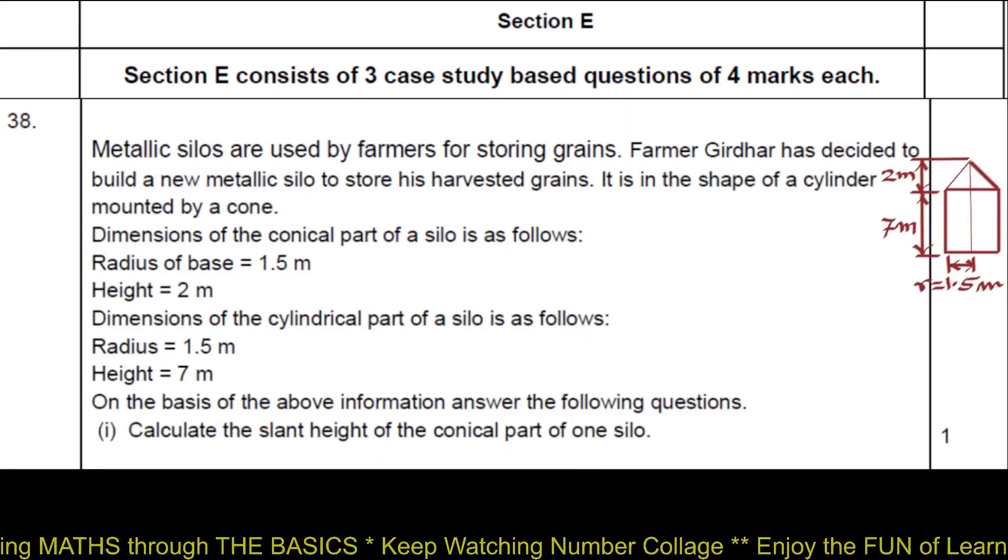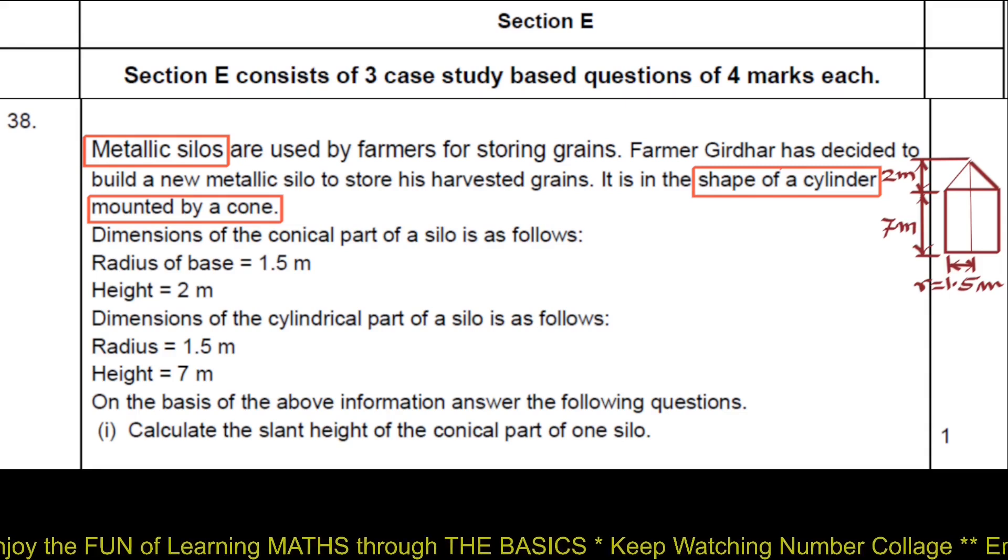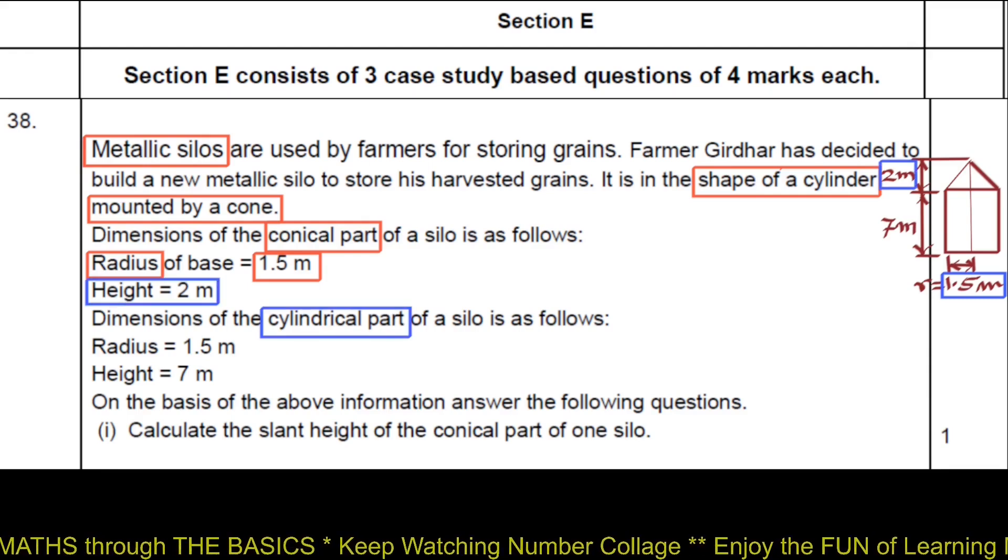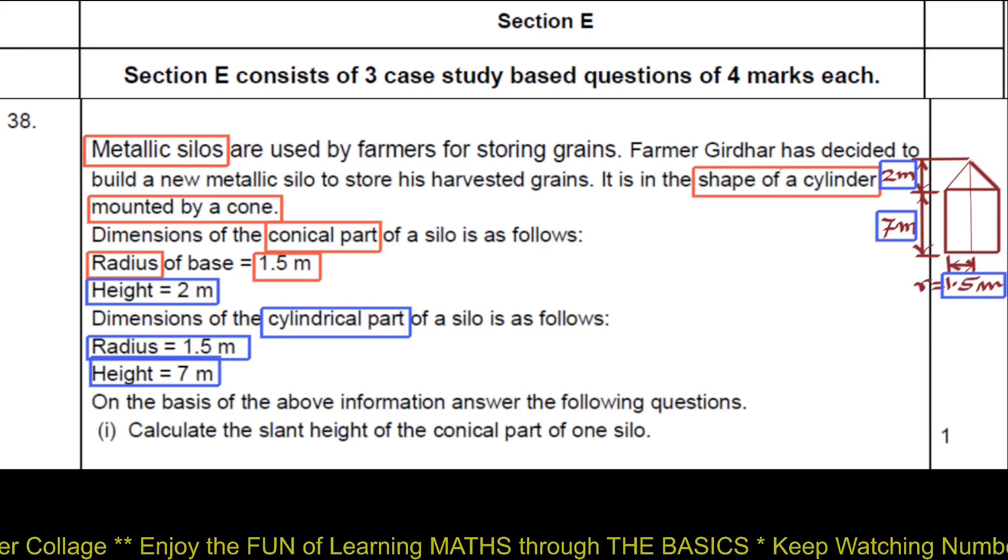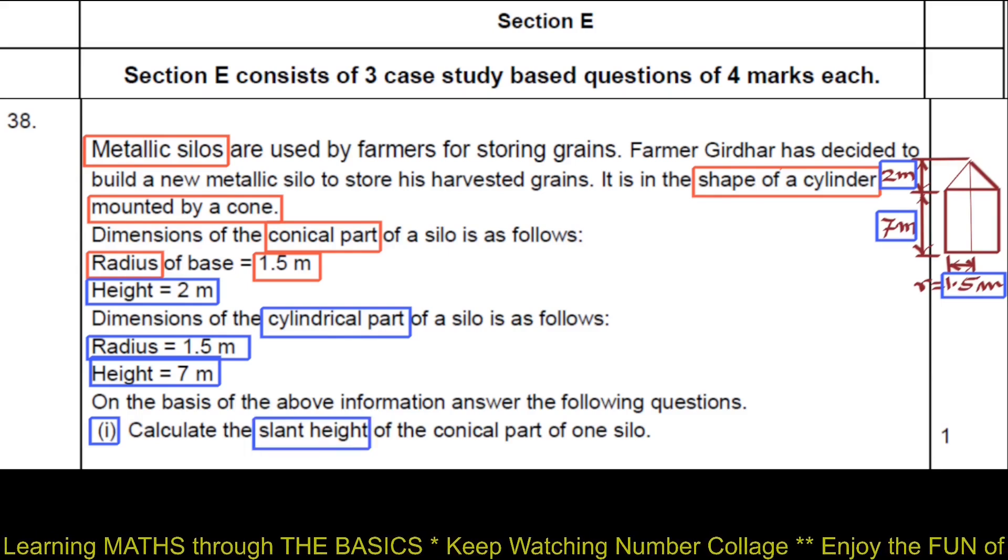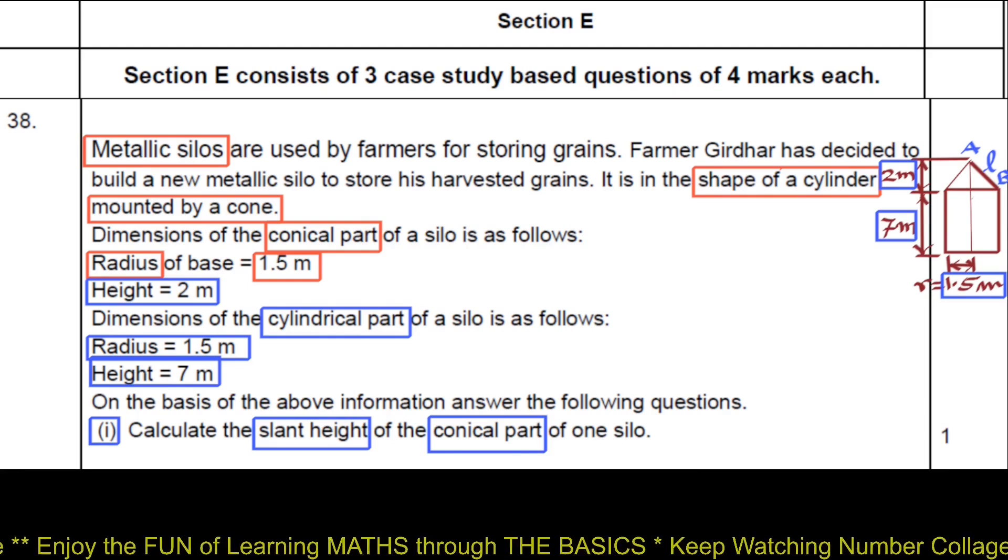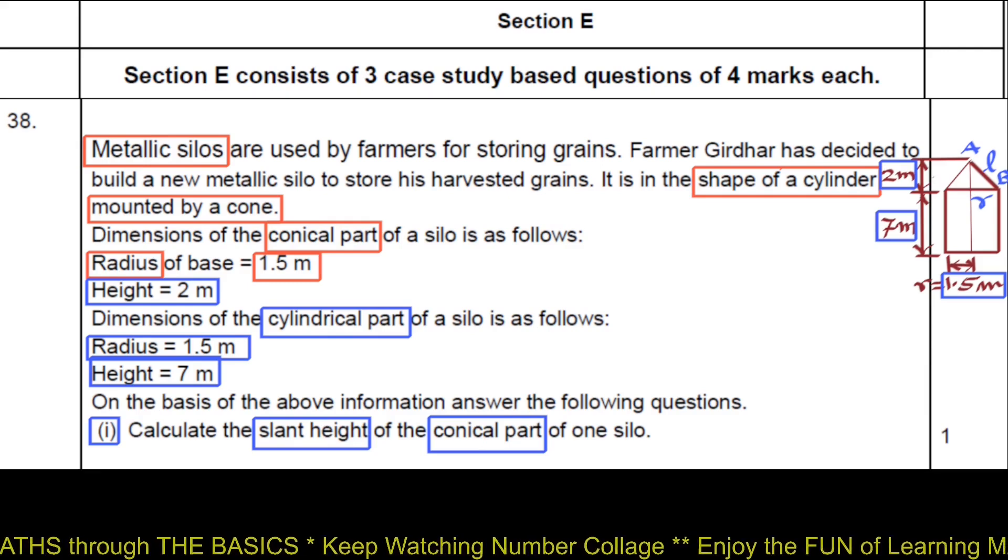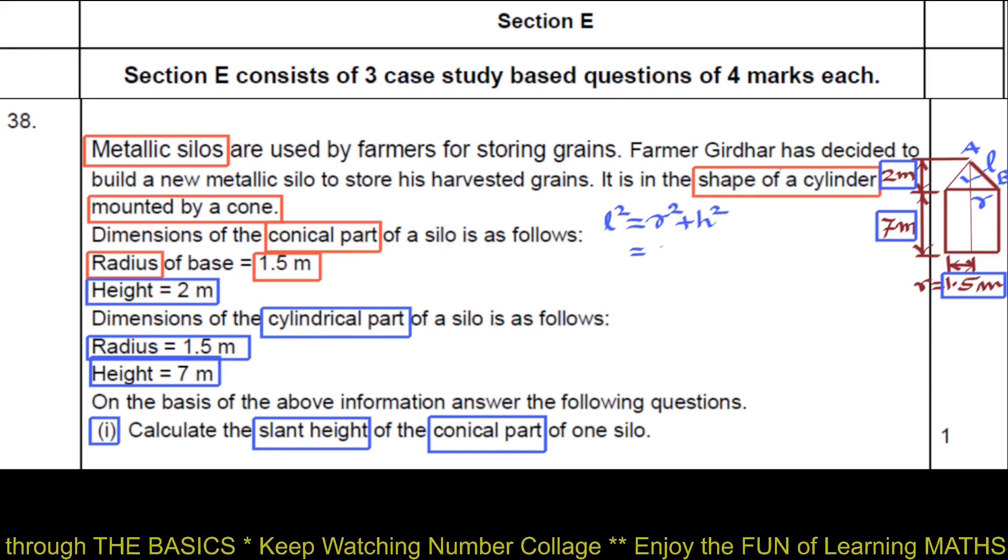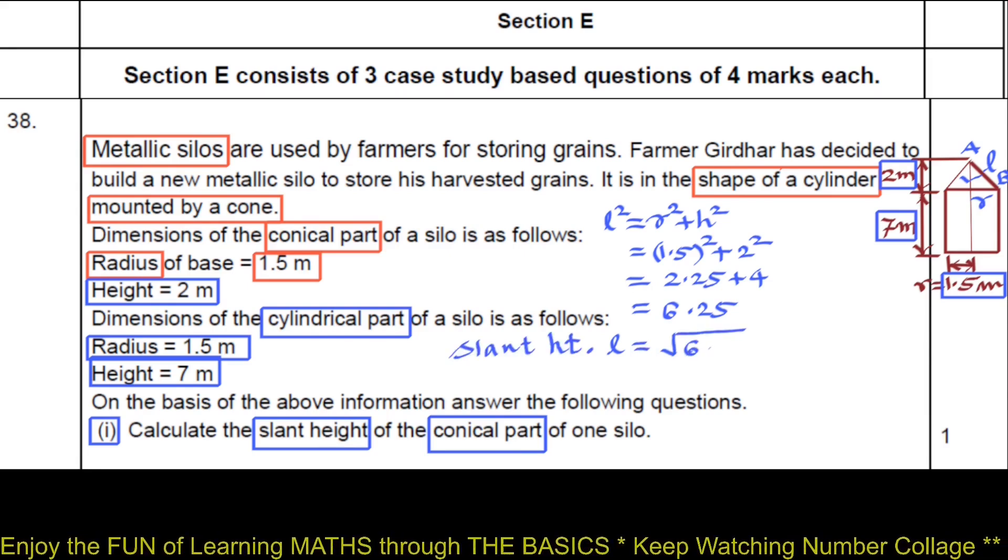The metallic silo is in the shape of a cylinder mounted by a cone. Like drawn here, dimension of the conical part of the silo: its radius 1.5 meter here, height 2 meter here. Dimension of the cylindrical part of the silo: radius 1.5 meter and height 7 meter. On the basis of this information, we have to answer following questions. The first sub question: calculate slant height of the conical part of one silo. Slant height AB is L, and radius of base of cone is R, 1.5 meter, and height of conical part is 2 meter here. So we have slant height L square equals R square plus H square, 1.5 square plus 2 square equals 2.25 plus 4 equals 6.25. So slant height L will be square root of 6.25, which is 2.5 meter.